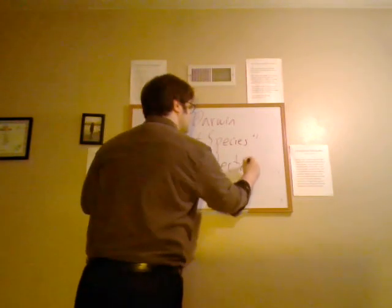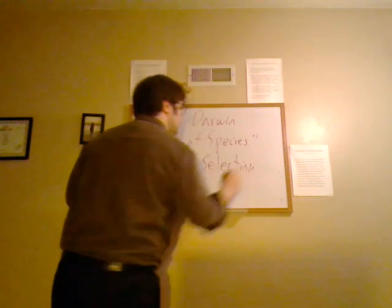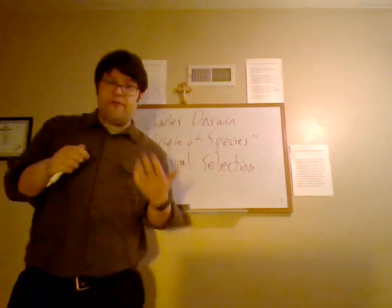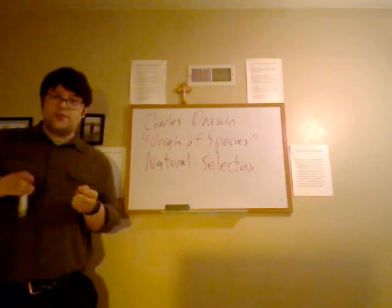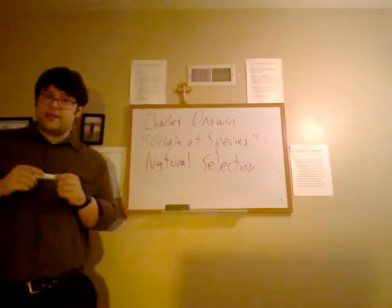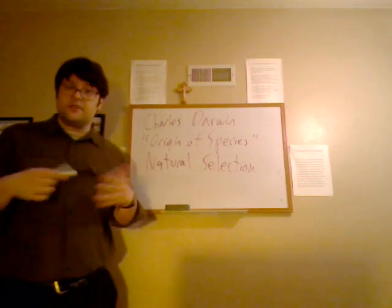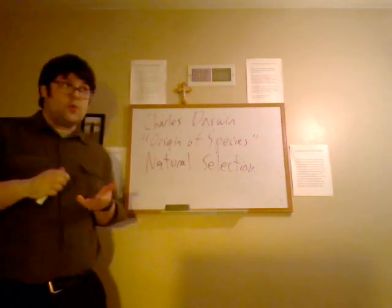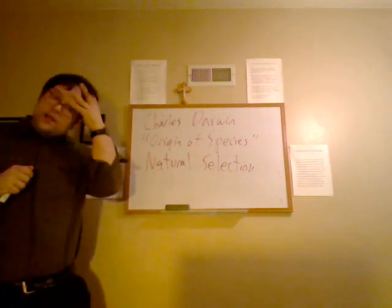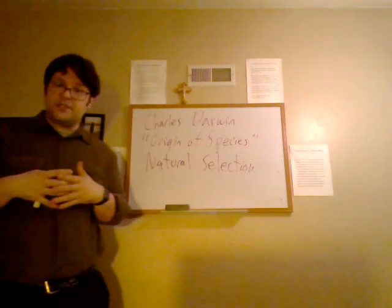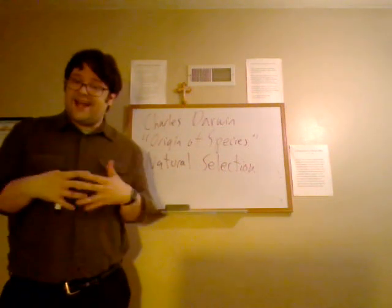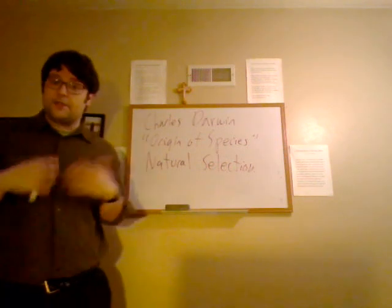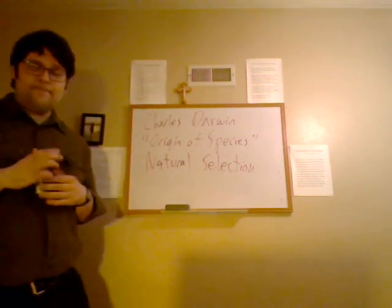The idea of natural selection is that certain species are more fit — they're more adaptable to the various things around them in order to be able to survive. Therefore, nature selects certain species, or certain kinds of things within species, to be able to survive and thrive, and some not.